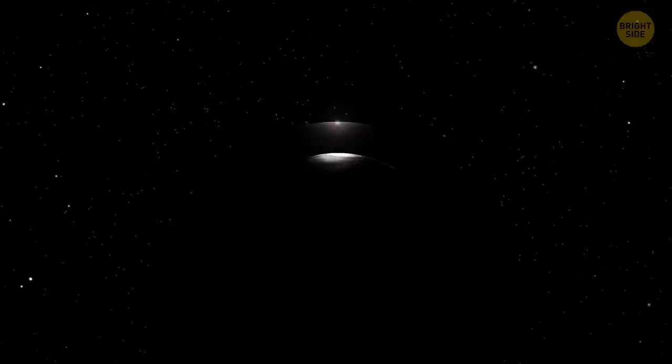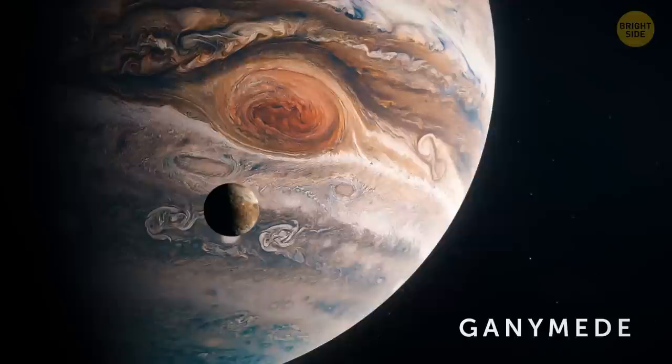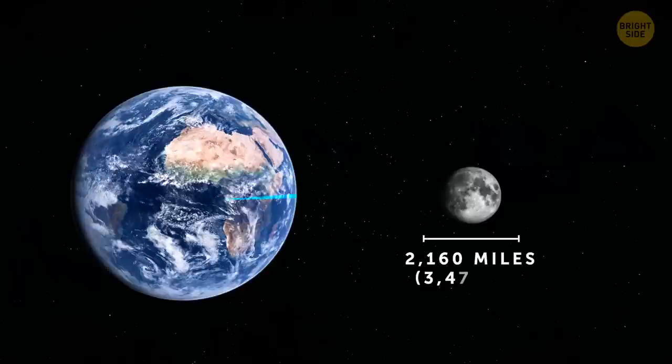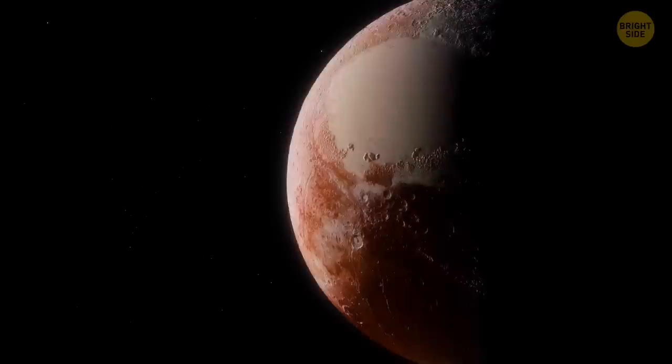Our moon certainly isn't the biggest one in the solar system. The champion here is Ganymede, one of the 79 moons circling around Jupiter. But our moon is the largest in relation to its parent planet. It has a diameter of more than 2,000 miles, which is slightly bigger than the quarter of the size of the Earth.